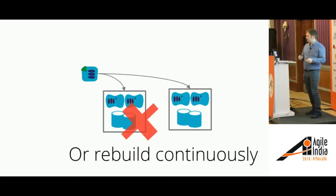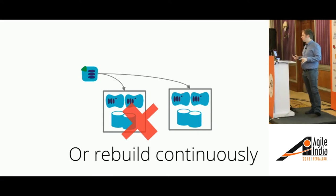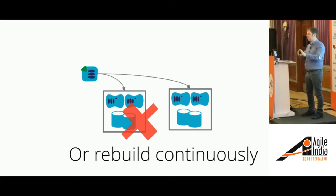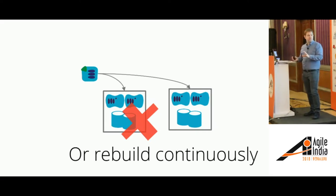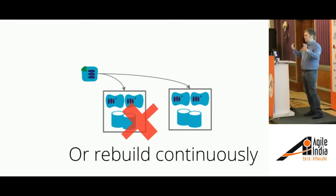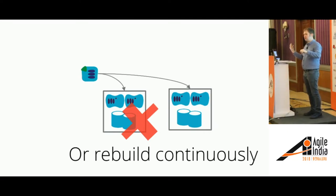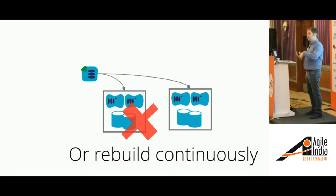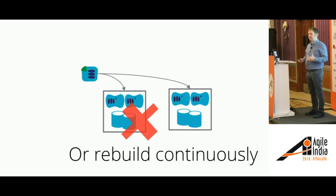Another strategy is immutable servers or immutable infrastructure. Rather than making a configuration change on a running server — whether patching, tweaking a configuration setting, or adding something — you build a new server with the change on it. Then you test it, redirect traffic or the service to the new server, and once you're comfortable that it's worked, tear down the old server. The key is to do this frequently so that servers don't live for very long, and you're confident everything is managed and defined by your tools.